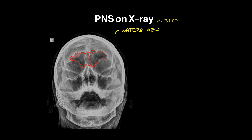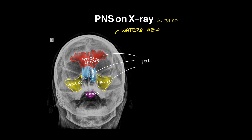In the Water's view, above the orbits we can see air-filled cavities — these are paired frontal sinuses, one on each side. Below the frontal sinuses, above the nasal cavity, in between the orbits, we have the ethmoid air cells. On each side of the maxilla bone we have air-filled cavities — those are maxillary sinuses, again paired sinuses. And here we can see the sphenoid sinus in the sphenoid bone.